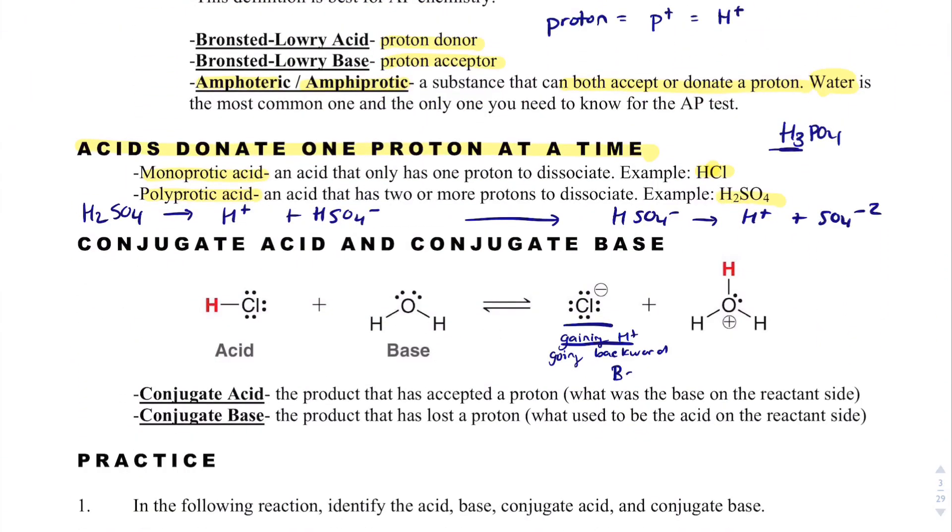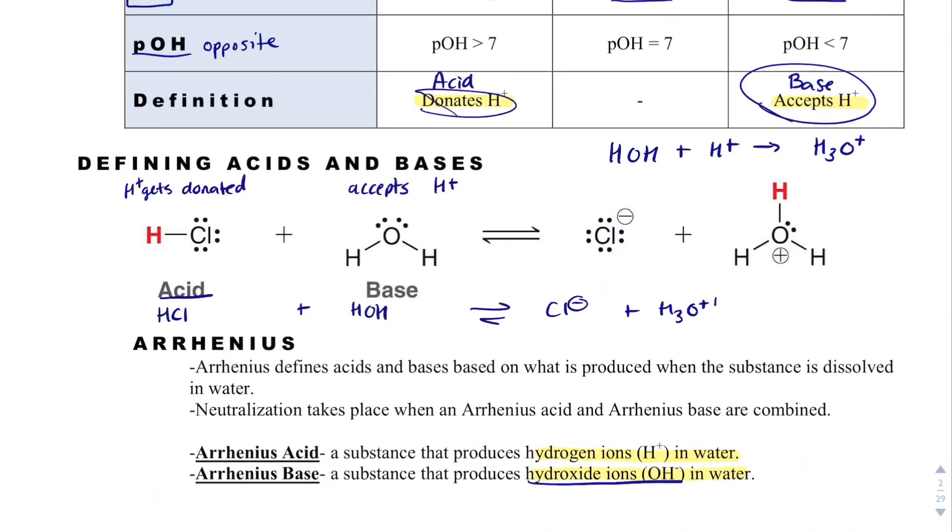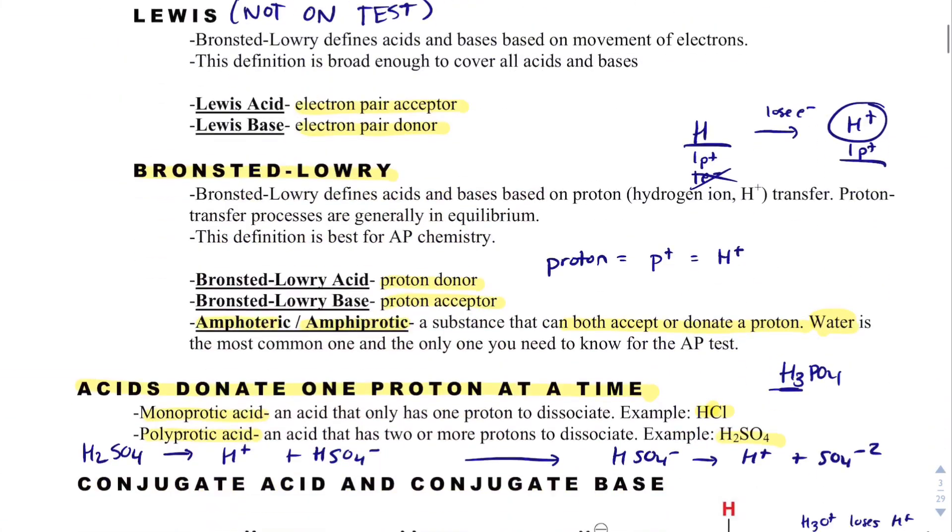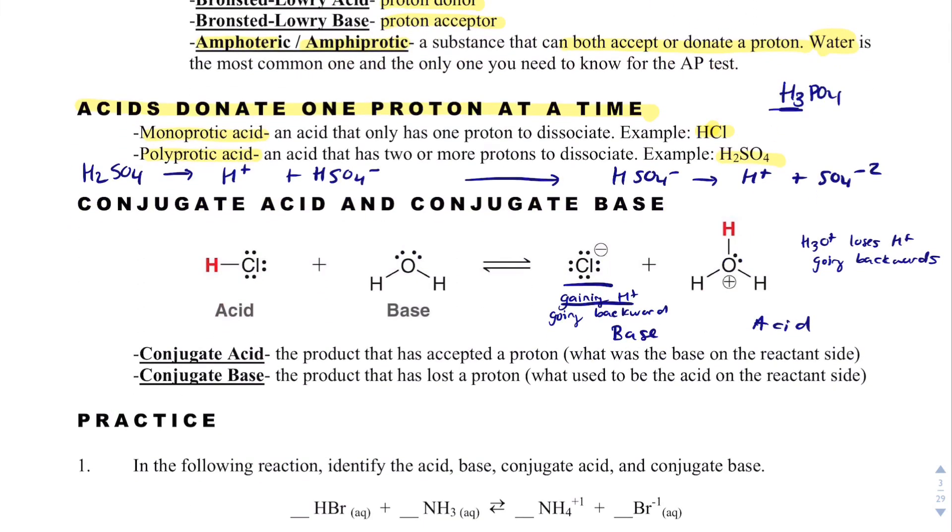So we'd call this a base going backwards. On the flip side, H3O+ loses an H+ going backwards. And by definition, if we lose or donate an H+, we're going to be acid. So this is going to be an acid.